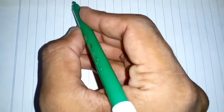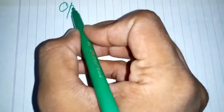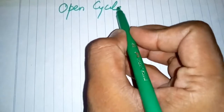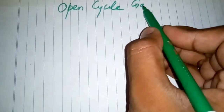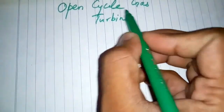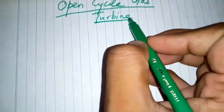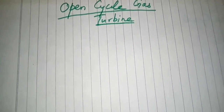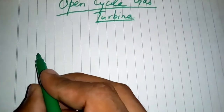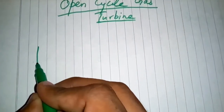Today's topic of discussion is open cycle gas turbine. The main components of an open cycle gas turbine are the compressor, combustion chamber, and turbine. Here this is the symbolic form for the compressor.